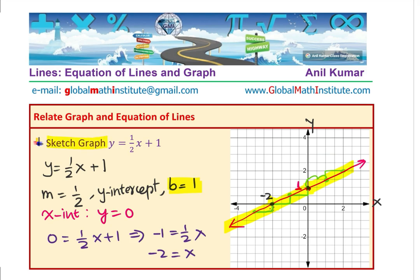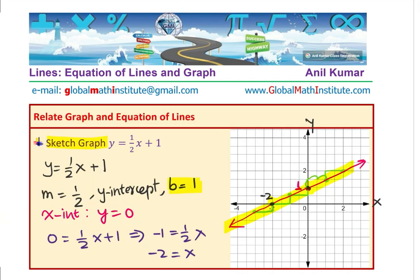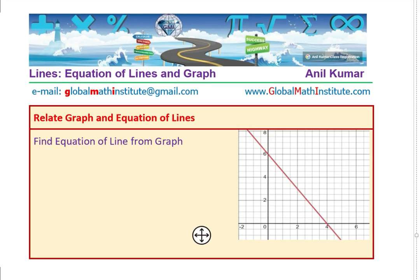So we have learned how to plot a line: calculate coordinate values, plot them on the graph, and connect with a straight line. Sketching means identifying x and y-intercepts, connecting them with a straight line, or using the y-intercept and rise over run from the slope. Now the last part is how to find the equation of a line from the graph itself.